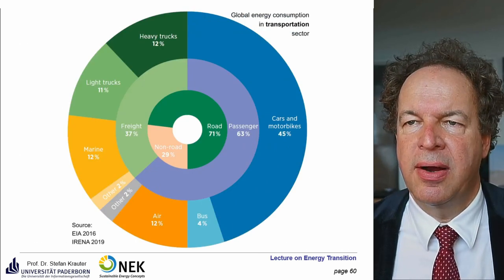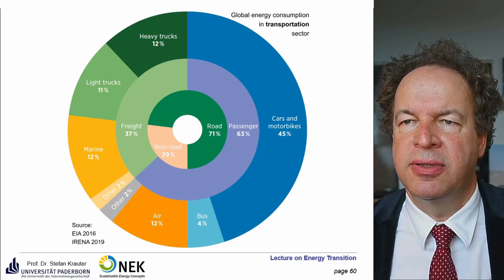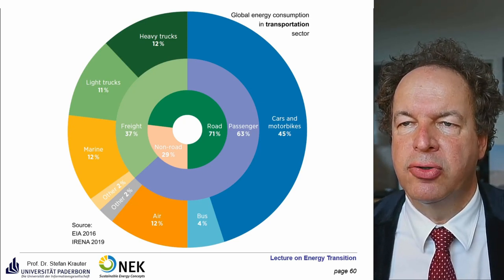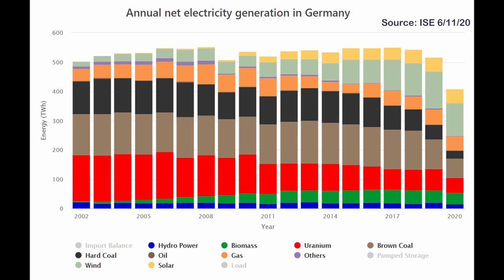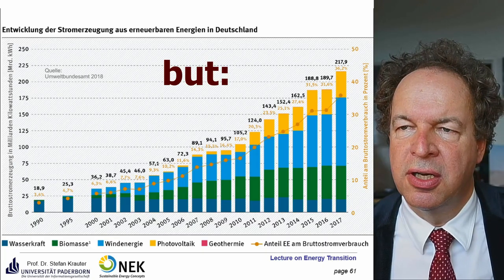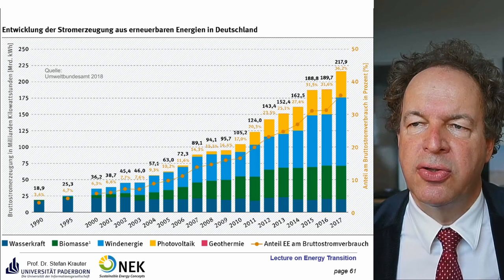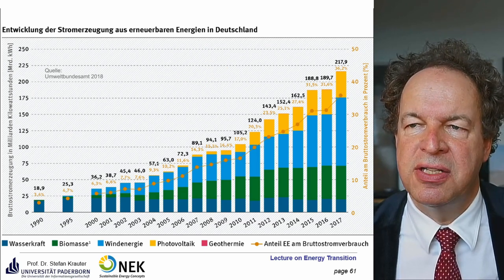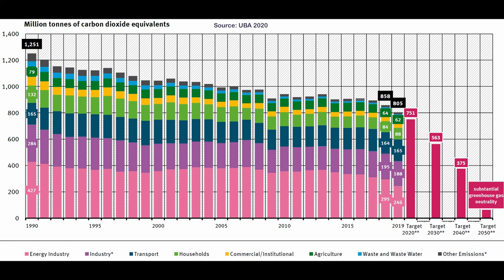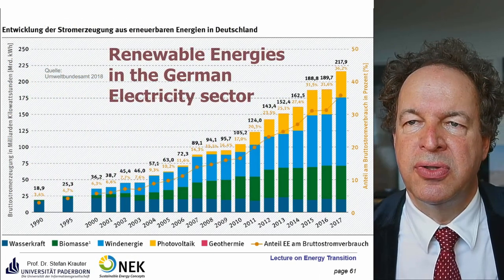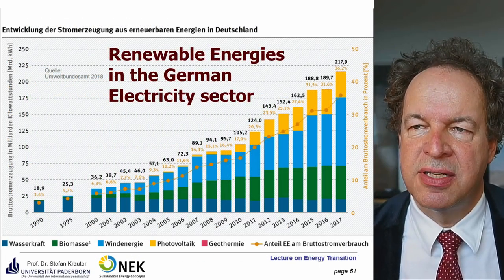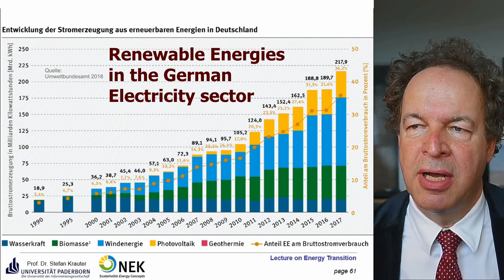Globally, most transportation energy is used for cars and motorbikes, then road and flight transport. Germany's renewable energy development is quite good, but not sufficient for a really significant reduction in CO2 — there is reduction, but not much. Most reduction takes place in the electricity sector. Unfortunately, in the mobility sector, because people are buying heavier cars, CO2 emissions are rising there, though increasing renewables in electricity bring them down at least a little.